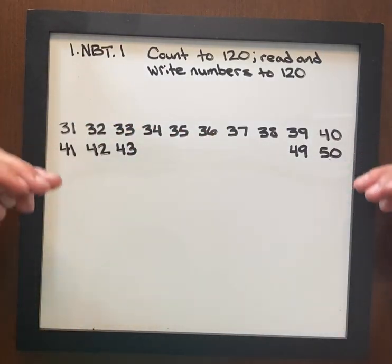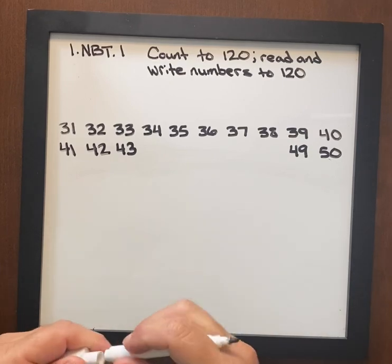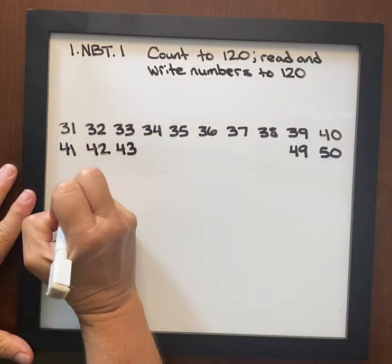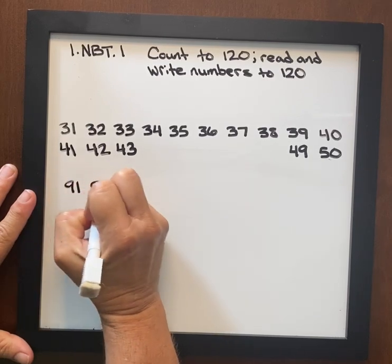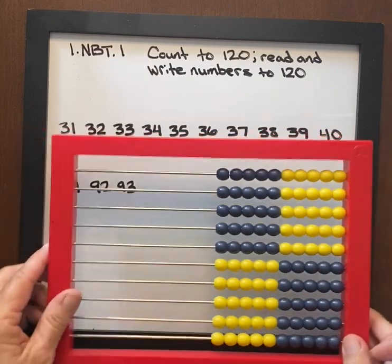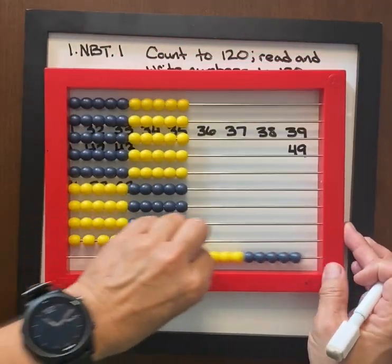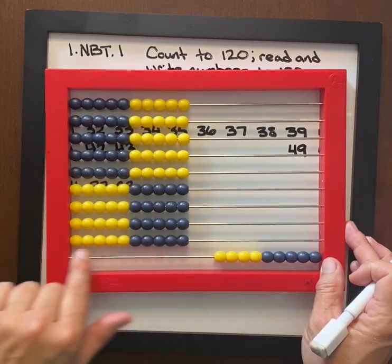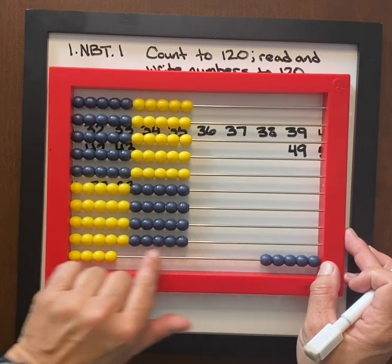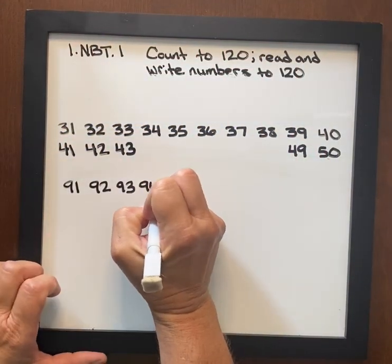So once students understand this pattern, it gets a little tricky when we're into our hundreds. So we can do the same concept, 9 tens 1, 9 tens 2, 9 tens 3. And I would have this out here, 9 tens 1, 9 tens 2, 9 tens 3, 9 tens 4, 9 tens 5. I would have that visual and have the students say it as well and write it.